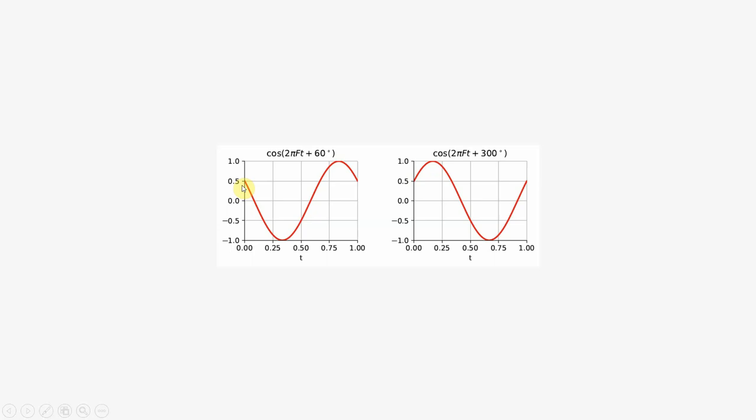The next step is to find this amplitude and the slope at this location. If it is negative we know that this is cos 2πft plus 60 degrees, and if this slope is positive we know that this is cos 2πft plus 300 degrees if we know the value of the amplitude.